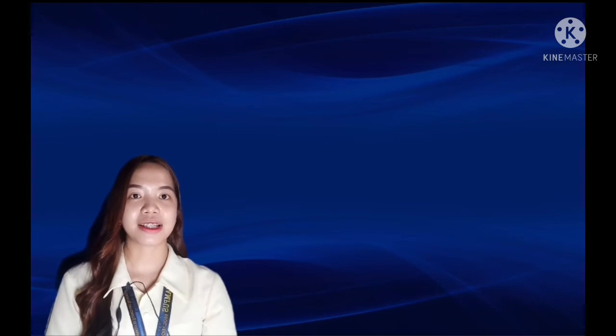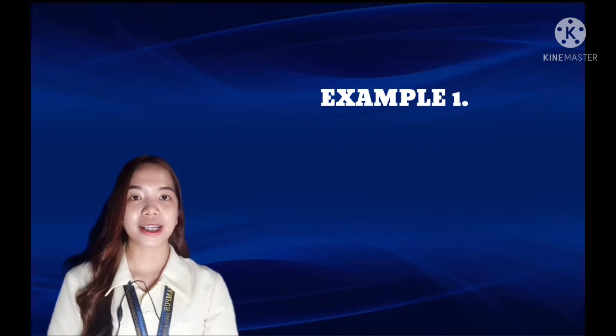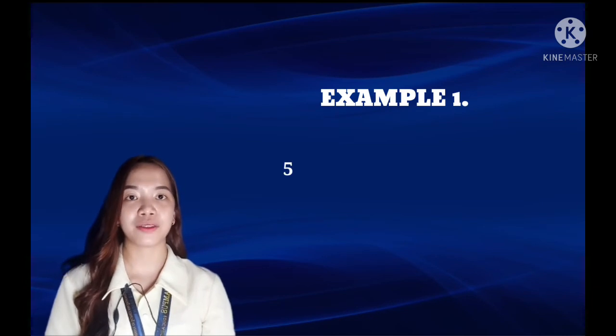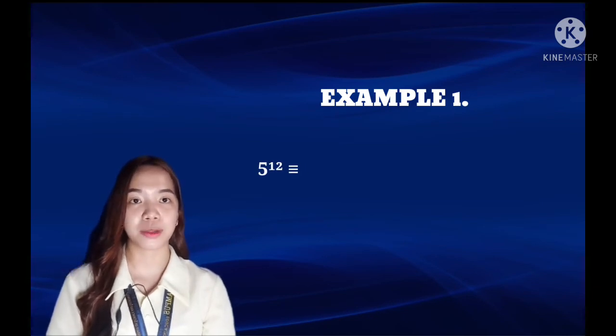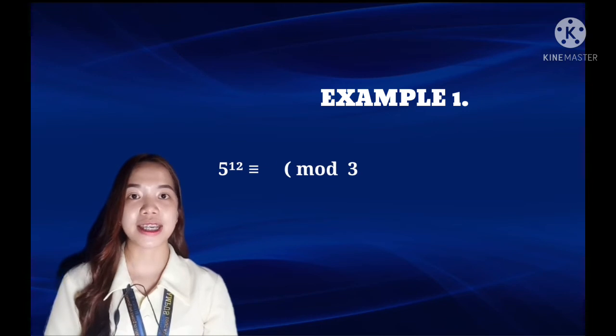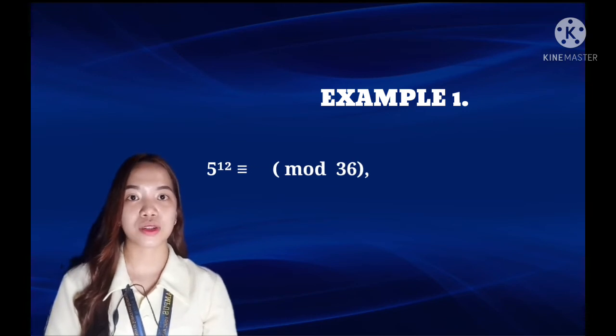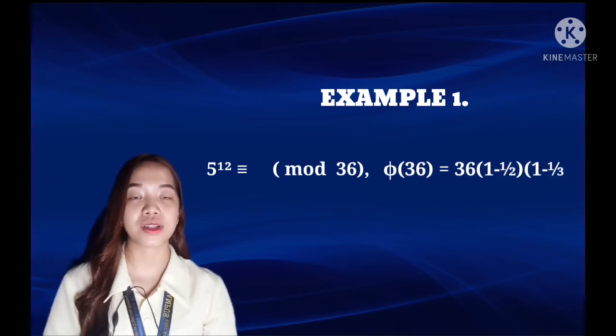So for us to better understand, we are here to have some examples. First example is, we have 5^12 is congruent to something mod 36. So let's see what is congruent to mod 36. We would probably start by calculating φ(36). So this is equal to 36 times (1 - 1/2) times (1 - 1/3).